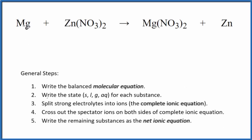In this video, we'll write the balanced net ionic equation for Mg plus Zn(NO3)2. This is magnesium plus zinc nitrate. It's a single replacement reaction.